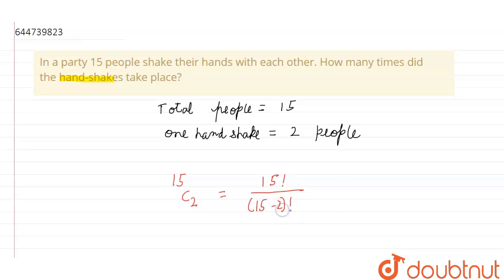Okay, so now we will open it: 15 into 14 into 13 factorial upon 13 factorial into 2 factorial. We will cut 13 factorial with 13 factorial.